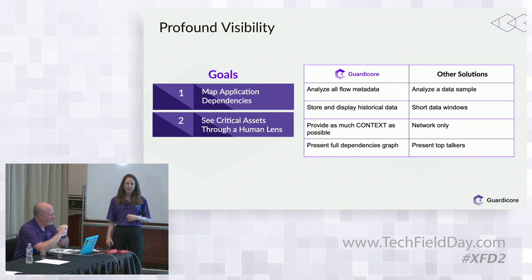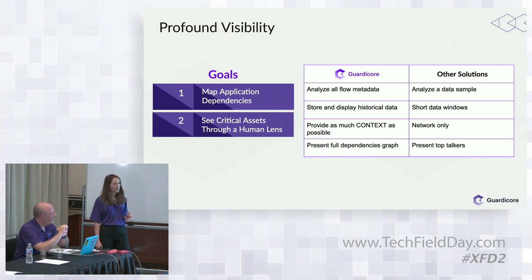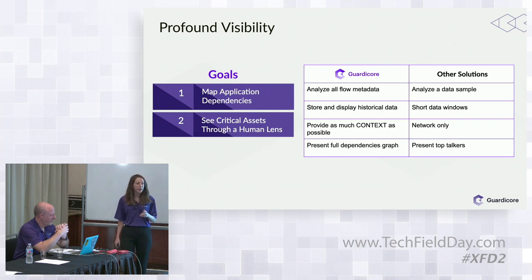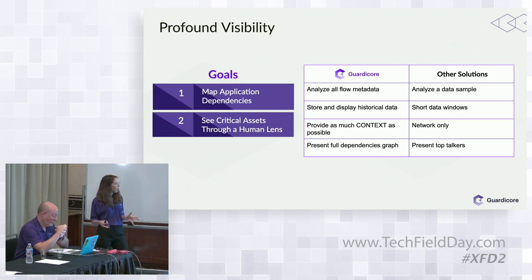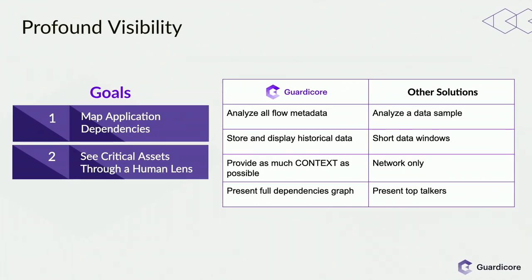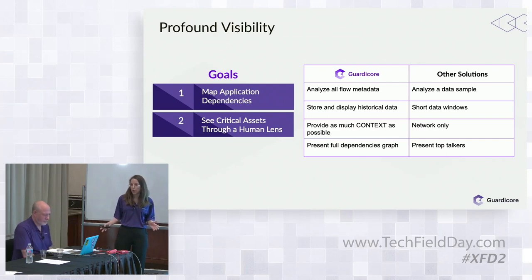What drove us forward: we analyze all flow metadata, which means we see every connection — successful connections, failed connections because existing firewalls are blocking them, and blocked connections that we have actually blocked. We collect all this with flow metadata. It's not a deep packet inspection solution, so there's no large overhead — it's a very small agent. We can store and display this data historically; you can view the last 15 minutes or go back months or years.